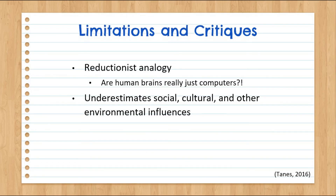Turning to limitations and critiques of cognitivism: a major critique is the analogy of human brains being like computers — it's very reductionist. Realistically, our brains and learning are much more complex than a computer. Cognitivism also underestimates the social, cultural, and other environmental influences on learning, and has been criticized as being overly focused on individual cognition.